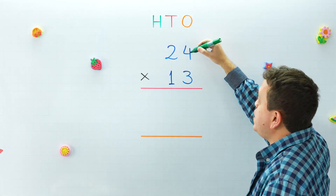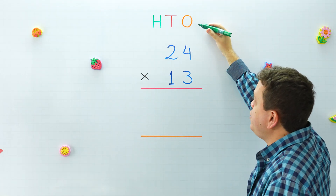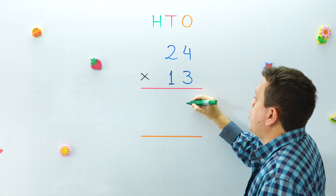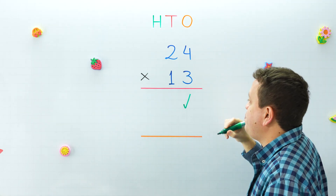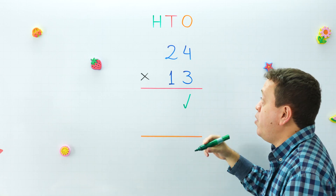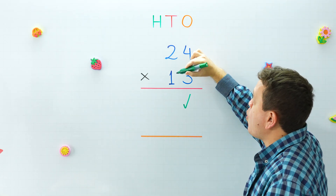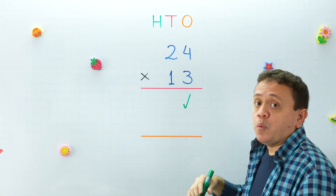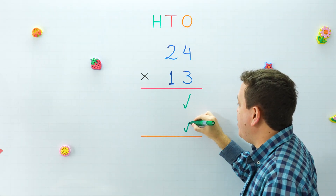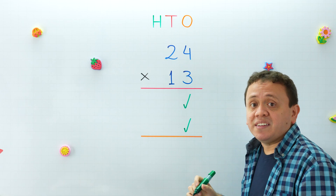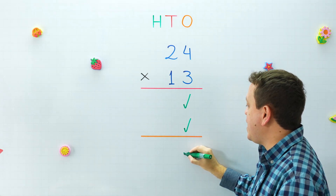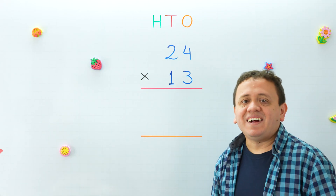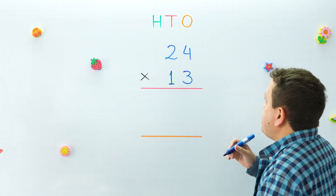In the first step we're going to multiply 24 by three ones. In the second step we're going to multiply 24 by one ten. And in the third step we just need to add these two numbers together to get our final answer. That's it — let me erase the board.